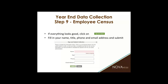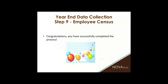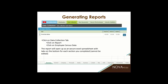Once everything looks good and all nine other steps are completed — the employee census step is the last one — click sign and submit, enter your information, and click submit. You have then successfully completed the entire process of sending NOVA your year-end data collection. When it is done, you will no longer see it in the My Active Tasks tab. You will go to the data collection tab and see every year that you've completed with NOVA.